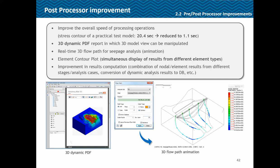For solver/processor improvements, the overall analysis speed has improved significantly. Generating a contour for a practical test model that took 20.5 seconds in FEA now happens in 1.1 seconds in FEA NX. A 3D PDF report can be generated, 3D flow lines can be seen for seepage analysis, and improvement in result computations means multiple different types of element results — like beam and solid results — can be viewed simultaneously.